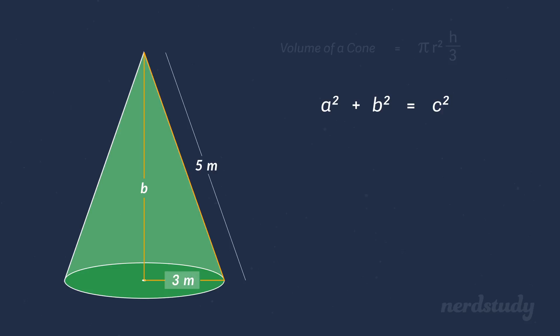We have the value of a and c, so let's plug them in to get 3 squared plus b squared equals 5 squared. Then we get 9 plus b squared equals 25.